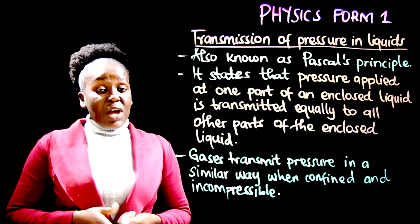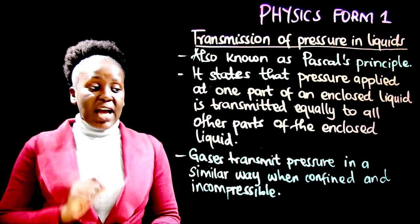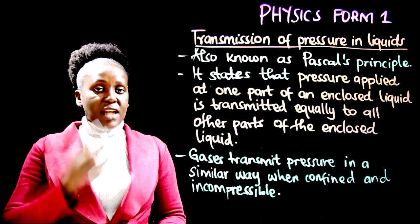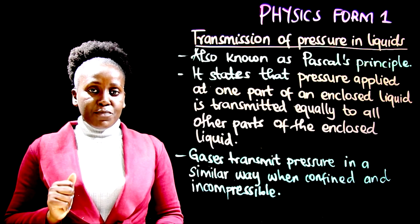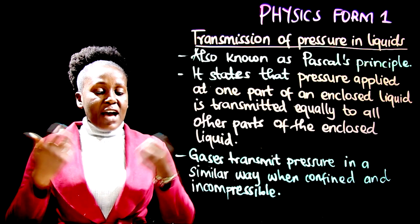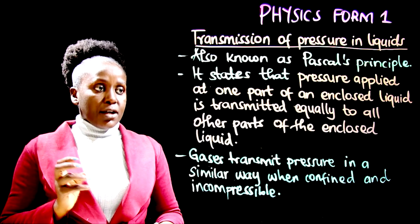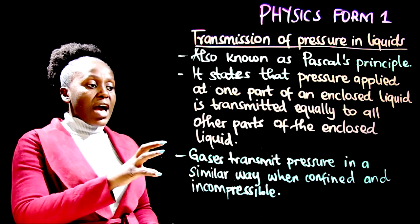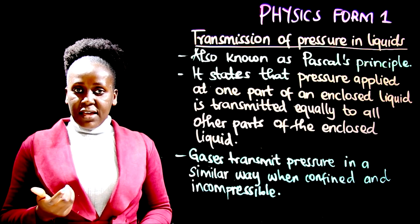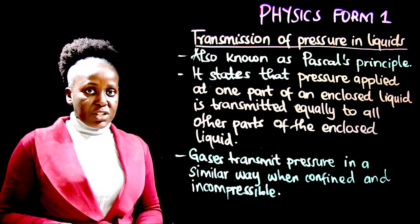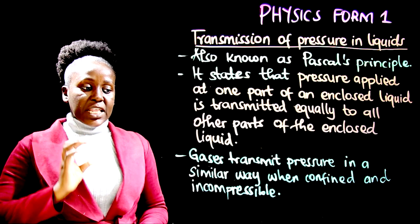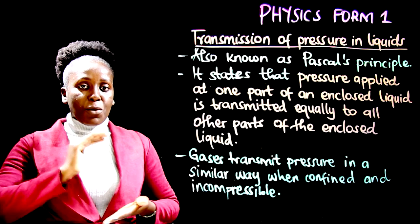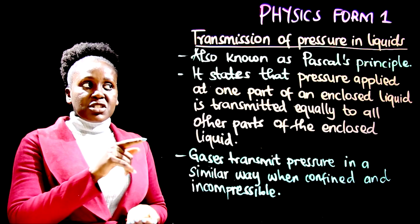Now, can this principle apply to gases? This principle can apply to gases given that two conditions are met: the gas is confined in a container, and the gas is incompressible. The air around us is not confined in a container, so this principle cannot apply there. But if you have air confined in a container, like in a car tire or a bicycle tire, and compressed to the maximum it can get, then this principle can apply.